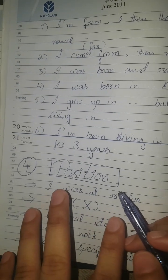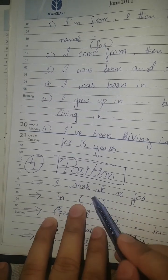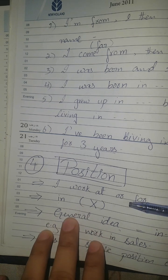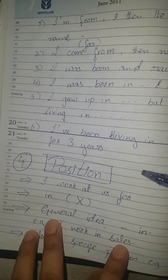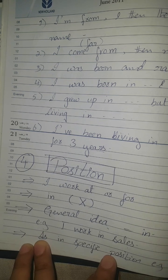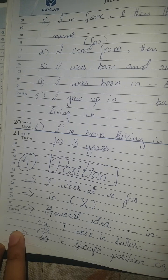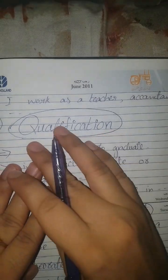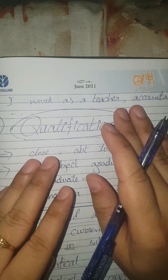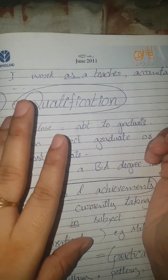Now, for your specific position: use 'I work at' or 'I work for.' You will not say 'I work in' for a specific company. However, if you want to give a general idea of your work field, you say 'in' — like 'I work in sales.' The preposition 'as' is used for a specific job title, like 'I work as a teacher' or 'I work as an accountant.' Choose your line according to your position.